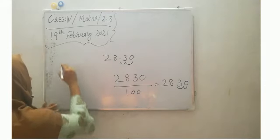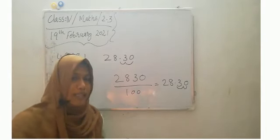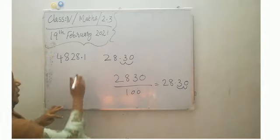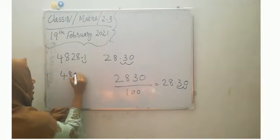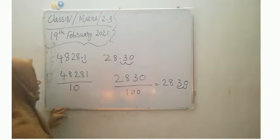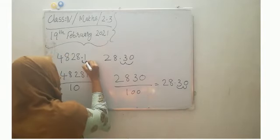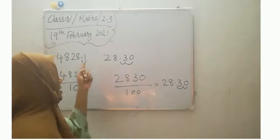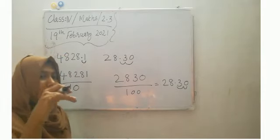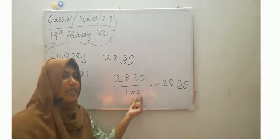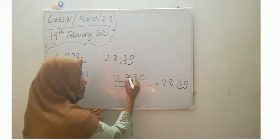Let's check another one: four thousand eight hundred and twenty-eight point one. Can you say which will be the denominator? Of course it is ten, as you know, because there is one place after the decimal. So write the number as given, then write the denominator. So to make a fraction, we should count the decimal place values — that is, numbers after decimal. And to convert to decimal, check the number of zeros in the denominator.